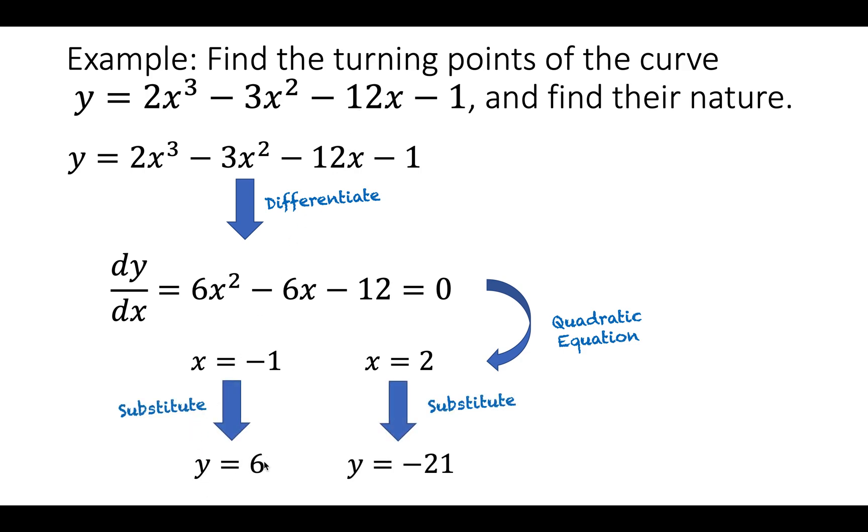We substitute and get y equals 6 and y equals minus 21. This makes the two coordinates minus 1, 6 and 2, minus 21. Make sure these are the right way around. If you mix up the x and the y coordinates the coordinate pair won't be correct.